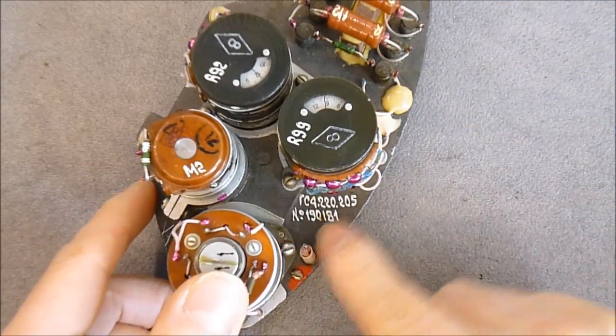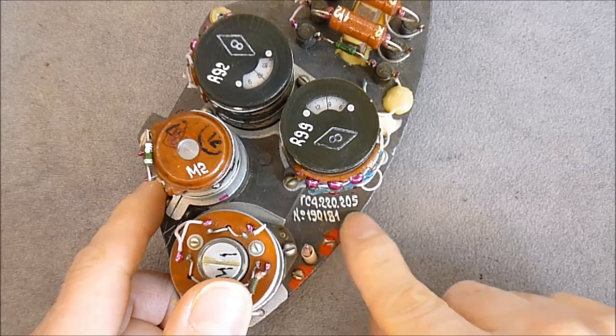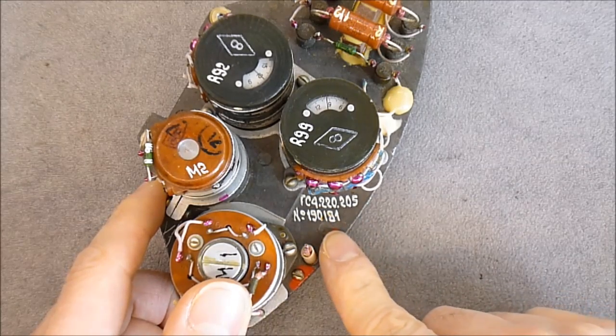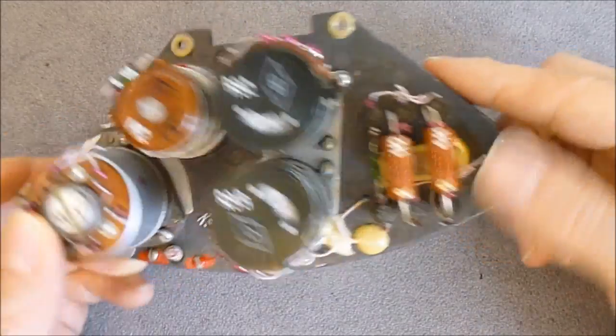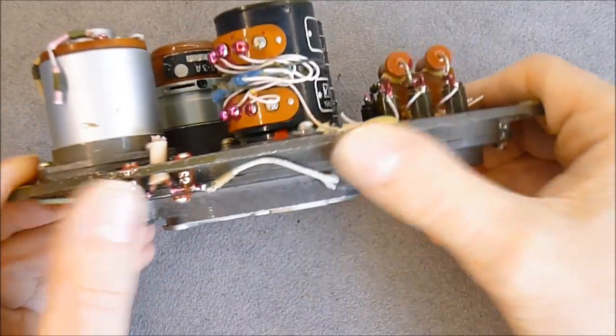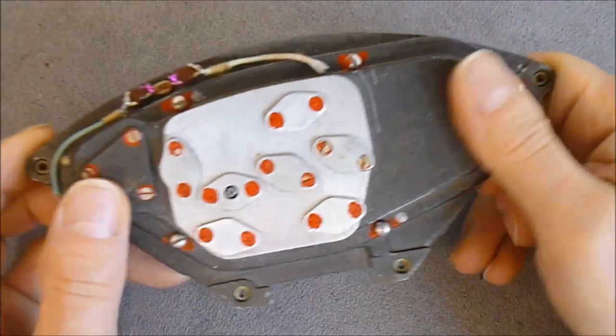So we have a model number here and the serial number. What do we have on this piece? So it is an aluminum piece backplane here.